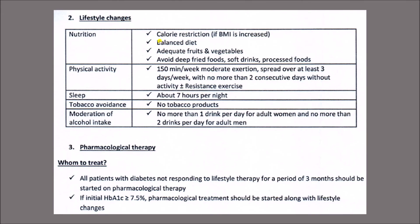Lifestyle changes: calories should be restricted if BMI is increased (i.e., the person is obese). A balanced diet with adequate fruits and vegetables providing dietary fiber should be taken; deep fried foods, soft drinks, and processed foods should be avoided. Physical activity of 150 minutes per week of moderate exercise, spread over at least three days per week (ideally five), is recommended. Sleep should be about seven hours per night, tobacco should be avoided, and alcohol should ideally be avoided or kept to no more than one drink per day for women and two for adult men.